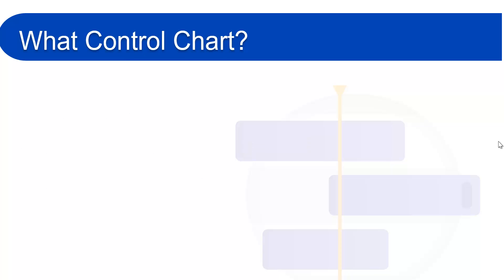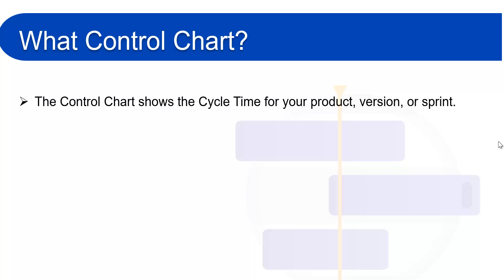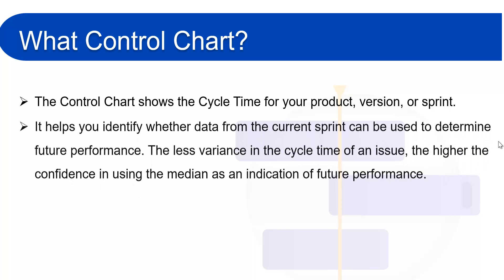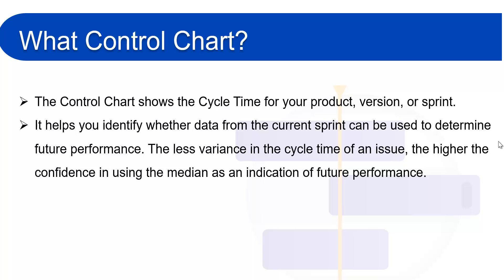The control chart shows the cycle time for your product version or sprint. It takes the time spent by each issue in a particular status and maps it over a specified period of time. It also helps you identify where the data from the current sprint can be used to determine future performance. The less variation in the cycle time of an issue, the higher the confidence in using the median as an indication of future performance.